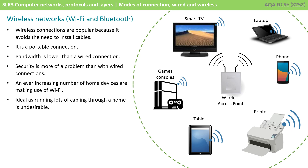Like most things in computer science, there are always trade-offs. With wireless networks, speeds tend to be slower than wired networks. They rely heavily on signal strength to the wireless access point, and signals can become obstructed. Wireless is also considered much less secure than a typical wired network.